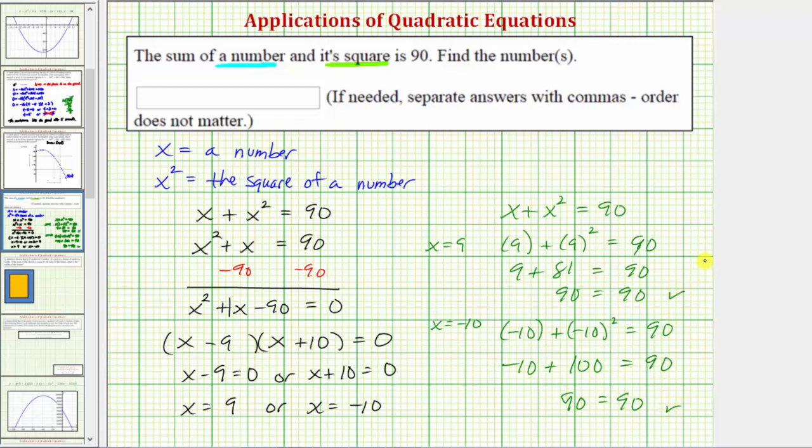And therefore both solutions satisfy our conditions. And therefore there are two numbers such that the sum of the number and its square equals 90. So we have two solutions. And it says if needed separate answers with commas, order does not matter. So we'll enter negative 10 comma nine. I hope you found this helpful.